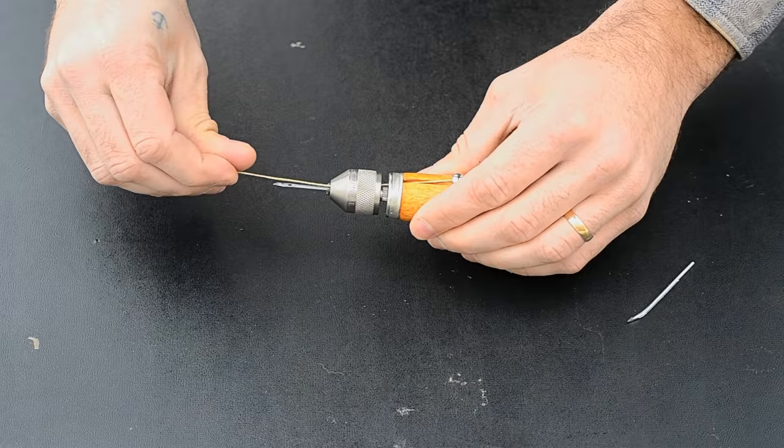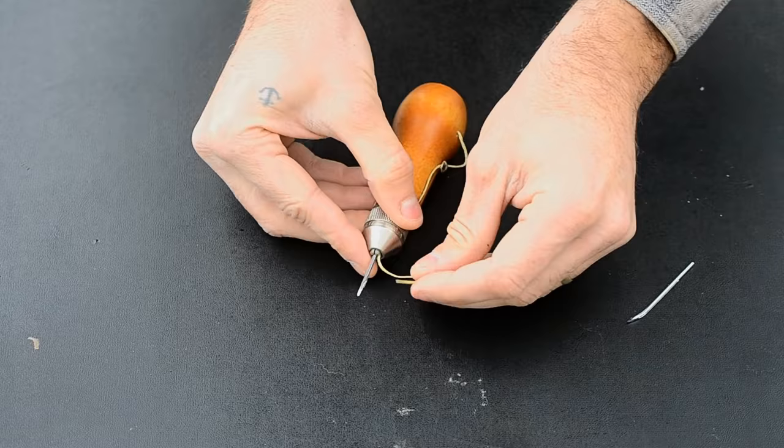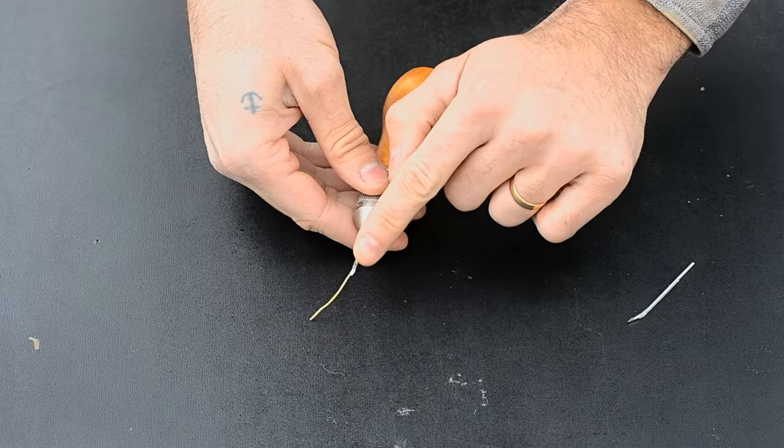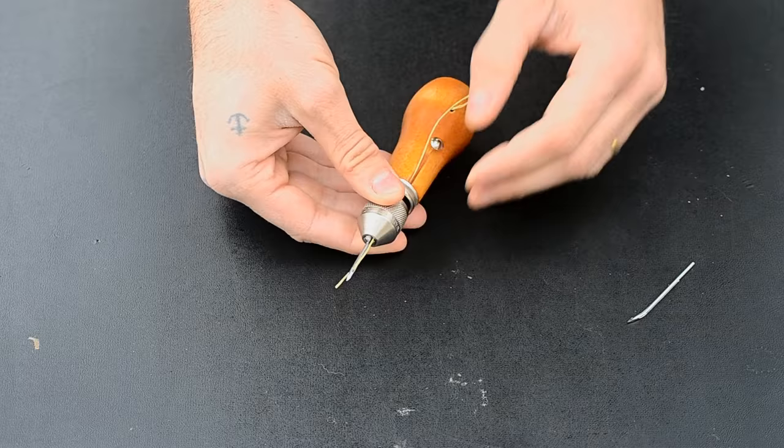Pull on the thread to make sure it unravels from the bobbin and moves freely. Now take your thread, pass it through the eye of the needle. See how the thread presses right into the groove of the needle. Pull your thread back so you have about a half inch coming out of the eye of the needle.